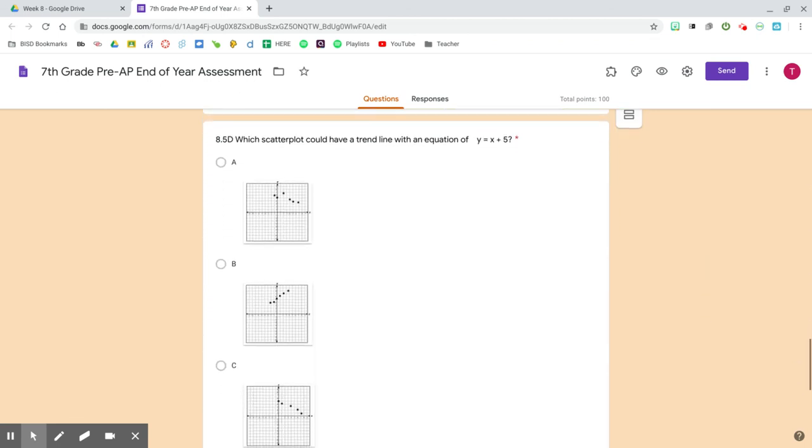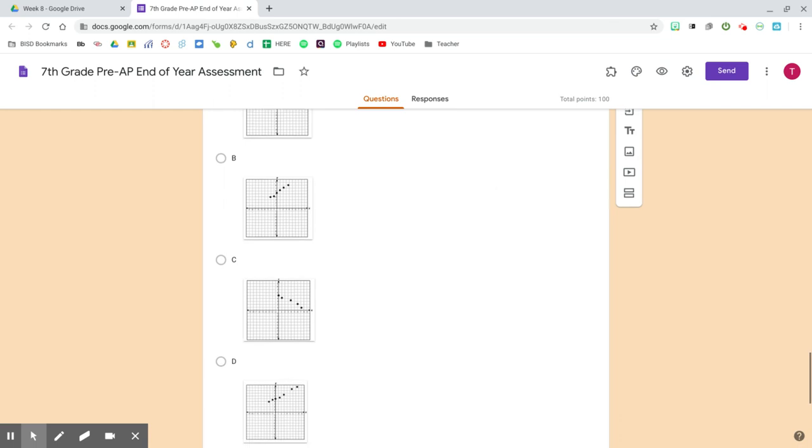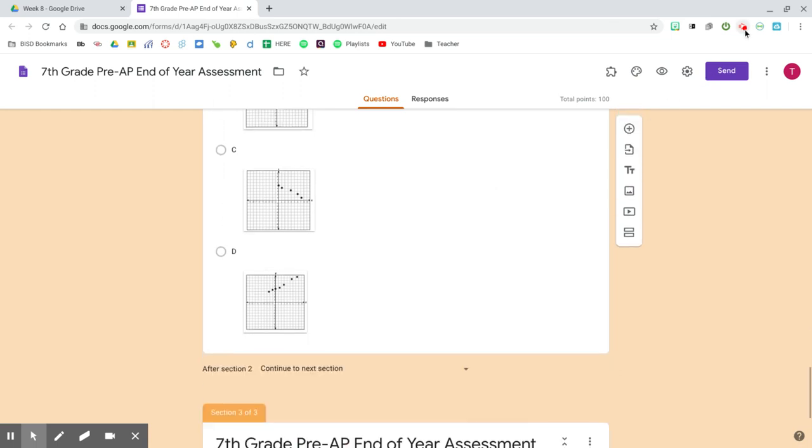Question 6. Which scatterplot could have a trendline with an equation of Y equals X plus 5? A, B, C, D.